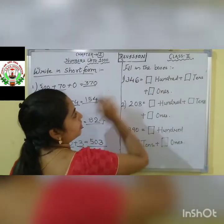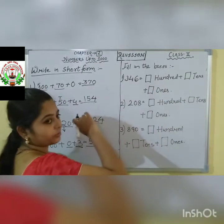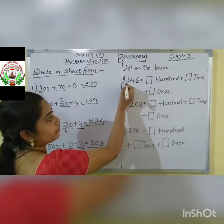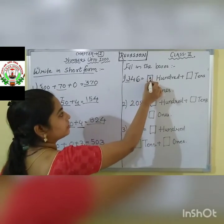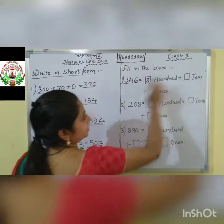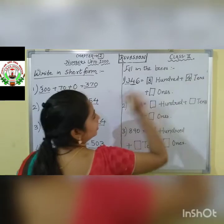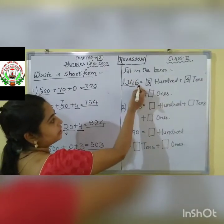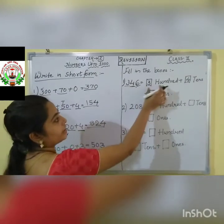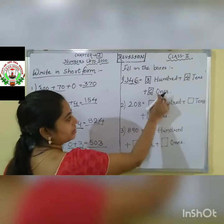Next question: fill in the boxes. Numbers are all given together. You have to divide them into the 100's space, 10's space, and 1's space. First: 346. In the 100's space, which number is given? 3. So write down 3 before 100. Then plus blank 10's — in the 10's space, which number is given? 4. So write down 4 tens. Then for the 1's, which number is given? 6. So write down 6 ones.